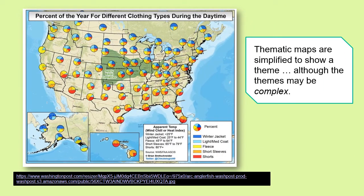Well, thematic maps are simplified to show a theme, although sometimes the themes can be rather complex, as you see on this one that shows you what should you be wearing, what proportion of the year. So you're going to be wearing shorts a lot more often in Florida as opposed to up in the upper peninsula of Michigan. So sometimes thematic maps are simplified to show one or more themes, but they can still be used for analysis, and sometimes they are complex.